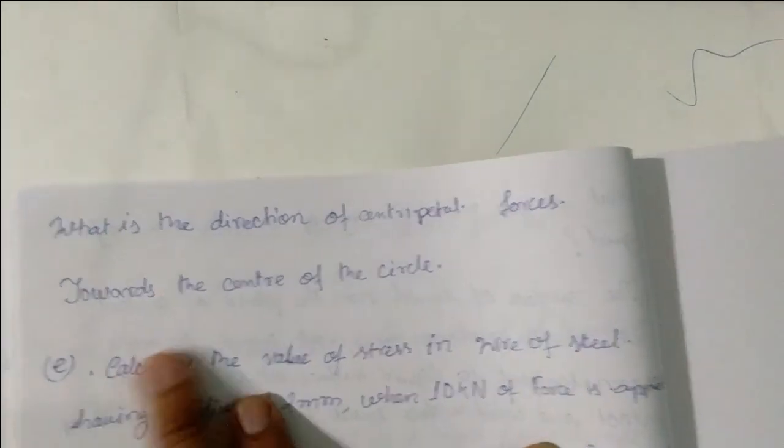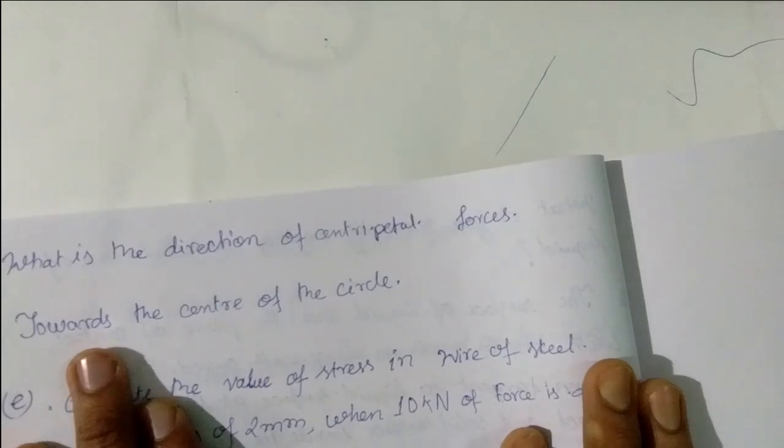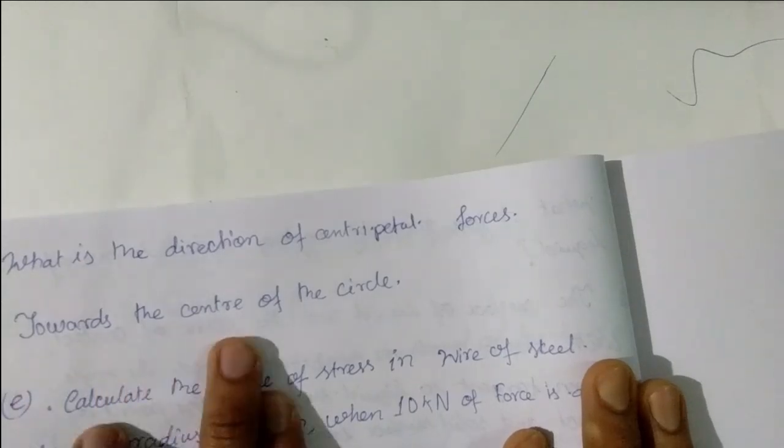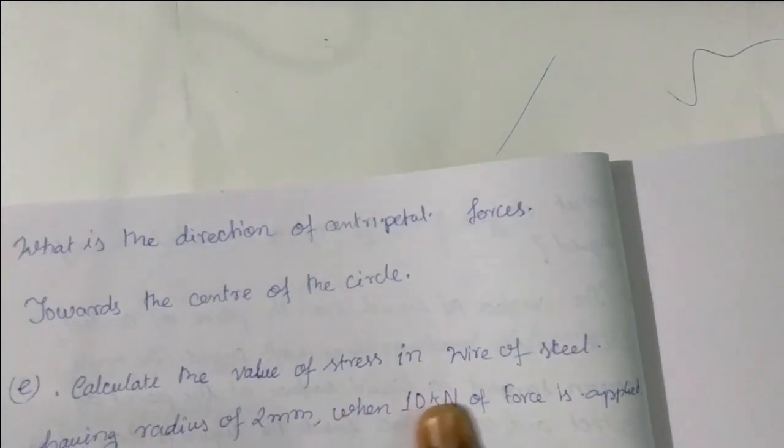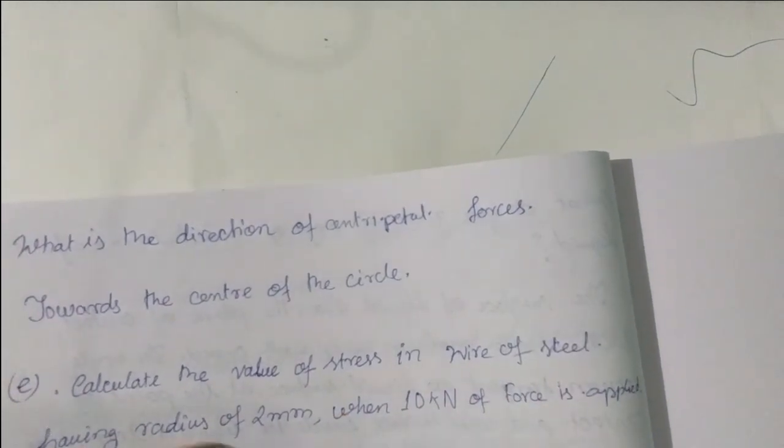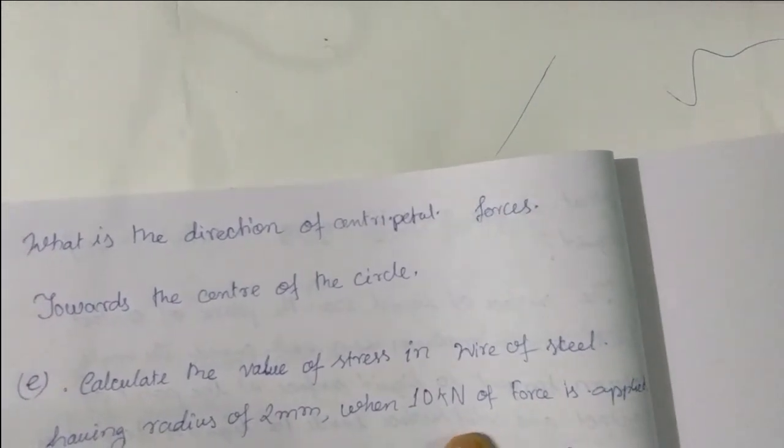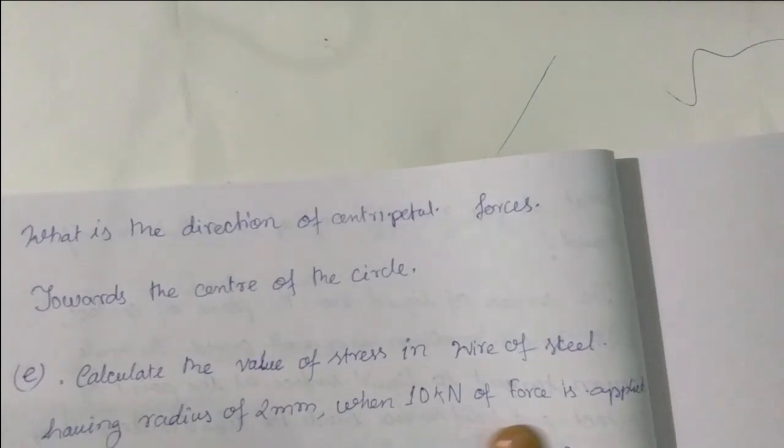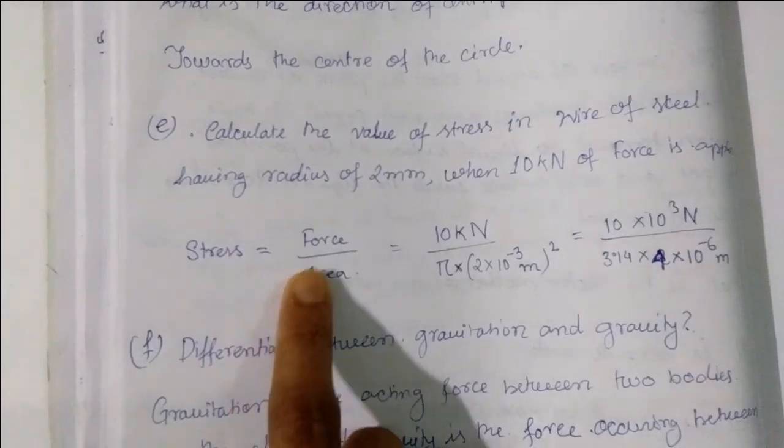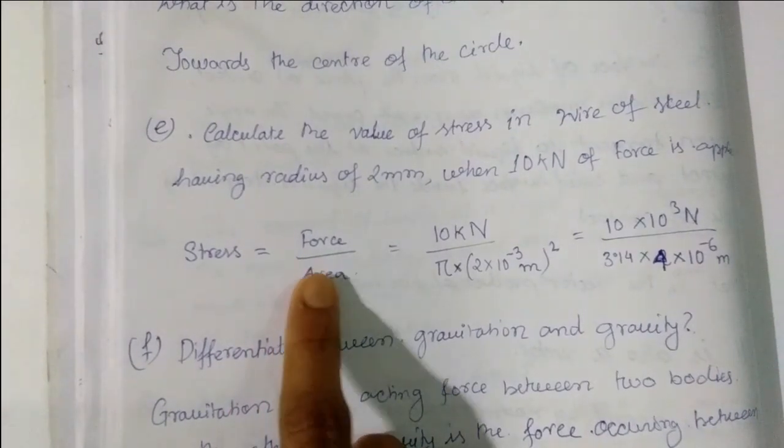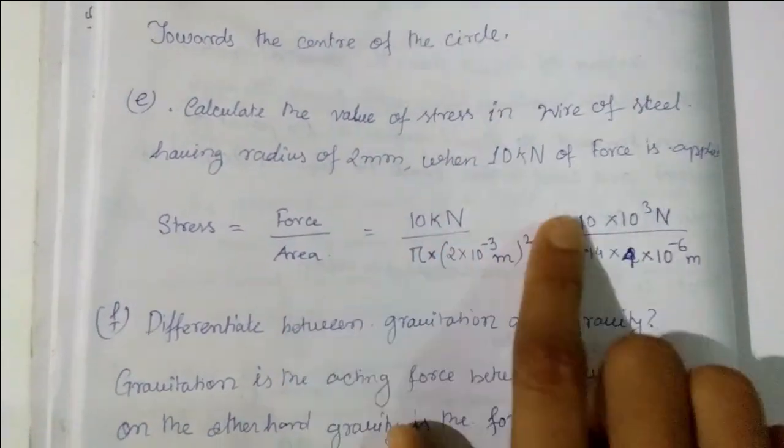Next question: What is the direction of centripetal force? The centripetal force is always directed towards the center of the circle. Next question: Calculate the value of stress in a wire of steel having a radius of 2 millimeters when 10 kilonewtons of force is applied. Stress equals force divided by area, which is force divided by πr².